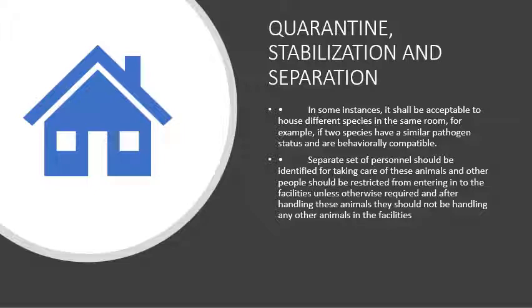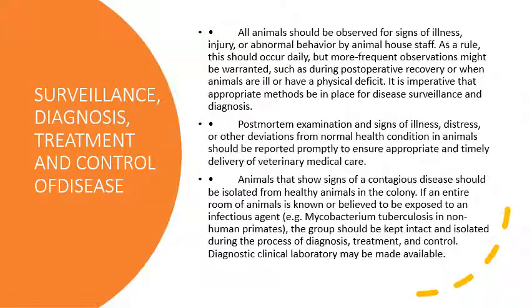Besides the veterinarian, you need personnel to take care of the animal and the animal house facility. All animals should be observed for signs of illness, injury, or abnormal behavior, requiring frequent observation. If they are in post-operative recovery or ill, they should be separated and followed up for treatment and recovery to avoid transmission of disease. Post-mortem examination and signs of illness or distress should be reported to ensure appropriate and timely delivery of veterinary and medical care.